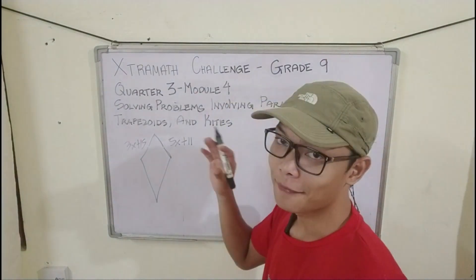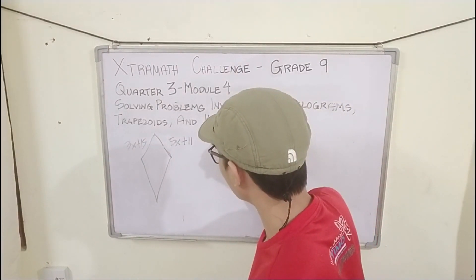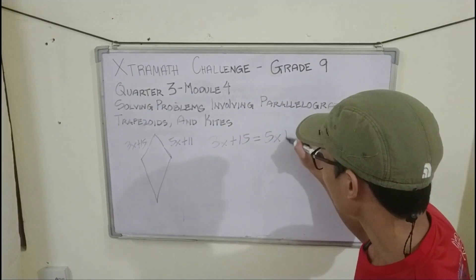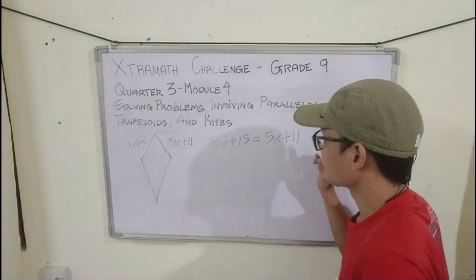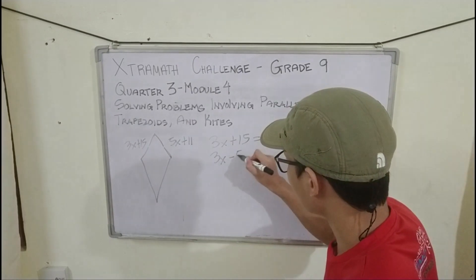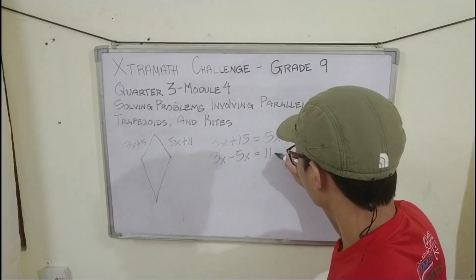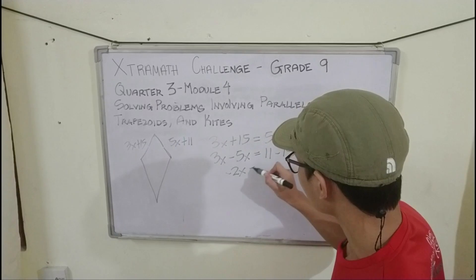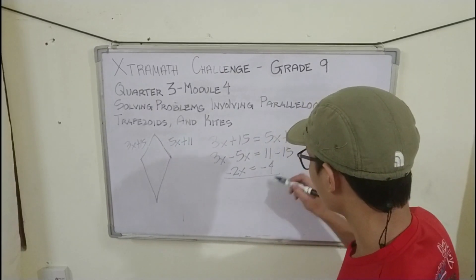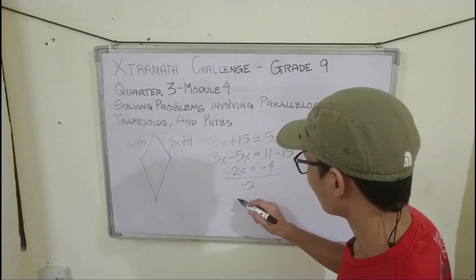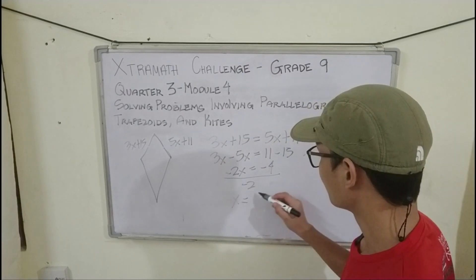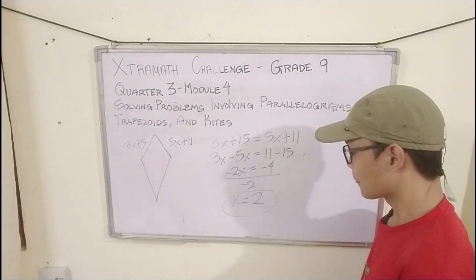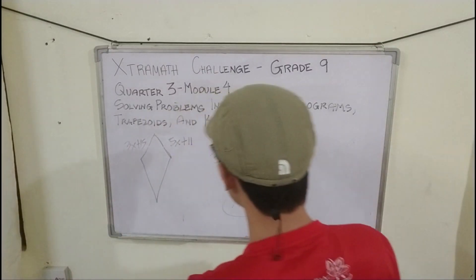Since these sides are both equal, we can equate the two lengths to find x. So: 3x + 15 = 5x + 11. Transposing: 3x − 5x = 11 − 15. Combining like terms: −2x = −4. Dividing both sides by −2, we get x = 2.